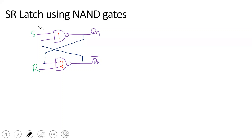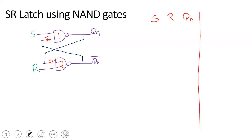Let's do the truth table. Gate 1 has two inputs: S and QN bar. Gate 2 has two inputs: R and QN. There are 4 input combinations. QN bar is used in the truth table because QN bar is the complement of QN.